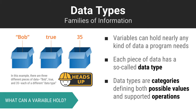Variables can be used to store just about anything, but most data can be categorized into what are called data types. Data types are like families of information that any particular piece of data can belong to. Data types are important because they define the possible values a variable can assume, as well as the operations that can be performed on it.